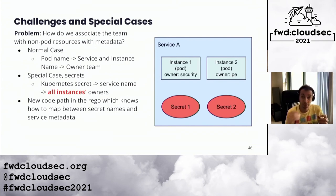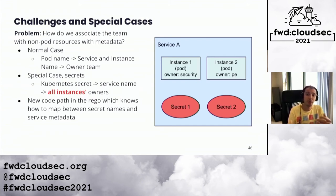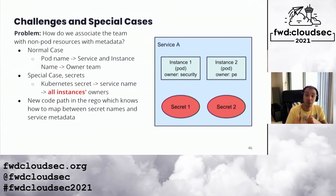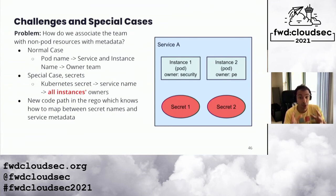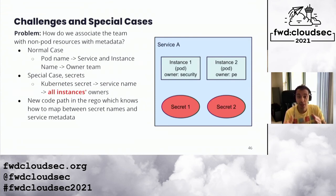The next problem was how to associate team ownership with non-pod resources that lack metadata. We previously talked about using pod metadata to associate a request with service metadata for team-based access. But some non-pod resources require special treatment — for example, secrets bound to services don't have team membership associated with them. To enforce least-privilege team-based access to secrets, we came up with special-case handling in the Rego policy: we only allow team-based access for secrets where the service belongs to the user's team and all service instances also belong to the user's team.